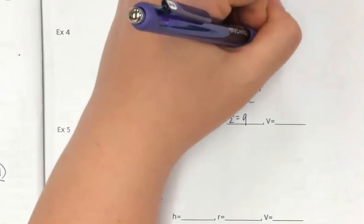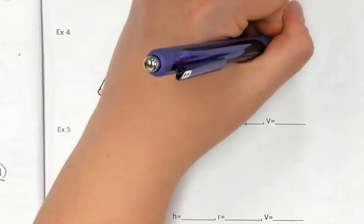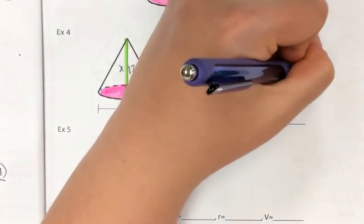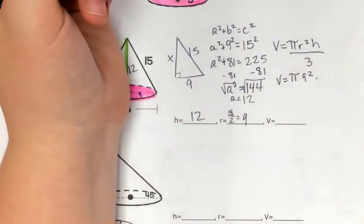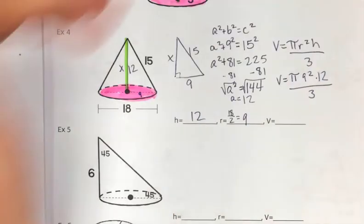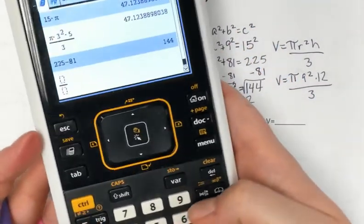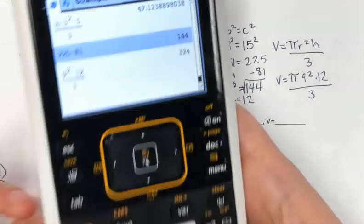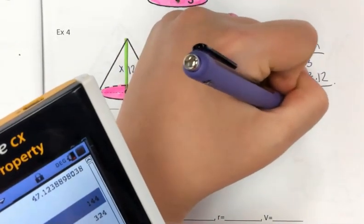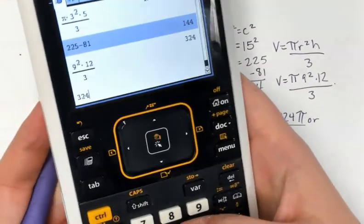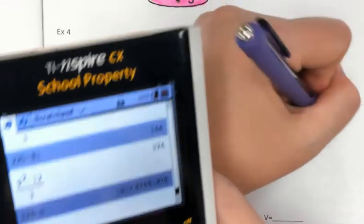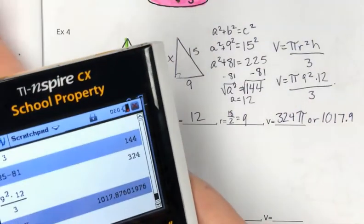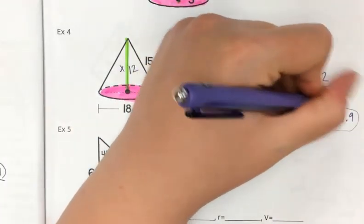But now we have everything we need. We have our h and we have our radius. So the volume is going to equal pi r squared h divided by 3. So let's plug those things in. Pi times 9 squared times our height of 12. Divide the whole thing by 3. So I'm going to put it in my calculator without pi first. 9 squared times 12 divided by 3 is 324 pi. Or 324 times pi is 1017.9. And those are our answers.